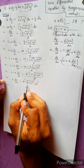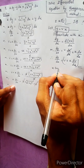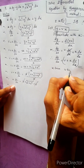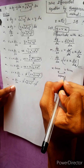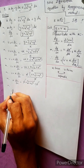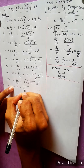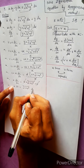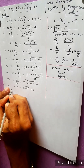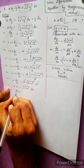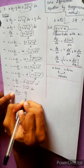Under root — cross multiply. Separate x terms and v terms. x into dv equals to under root 1 plus v squared into dx. Now dv divided by under root 1 plus v squared equals to dx divided by x.